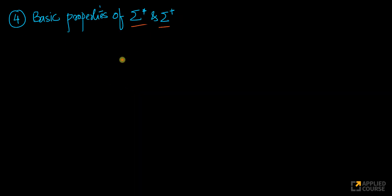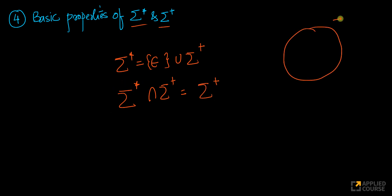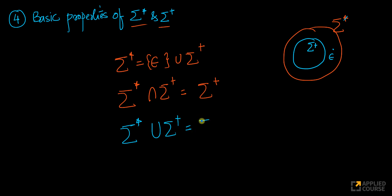Now let's look at basic properties. Sigma star is nothing but epsilon union sigma plus. The only difference between sigma star and sigma plus — between the Kleene closure and the positive closure — is the element epsilon. If you look at the intersection of sigma star and sigma plus, sigma star is the superset and sigma plus is the subset. The only element in the Kleene closure but not the positive closure is epsilon.